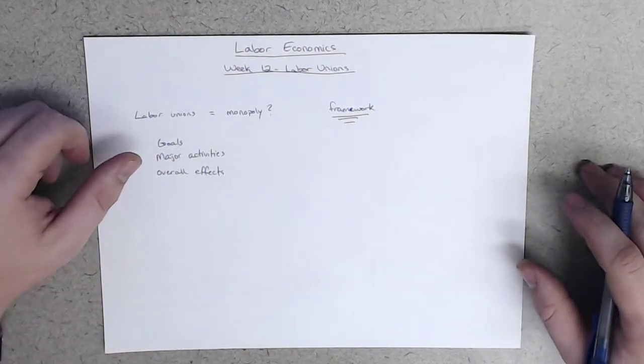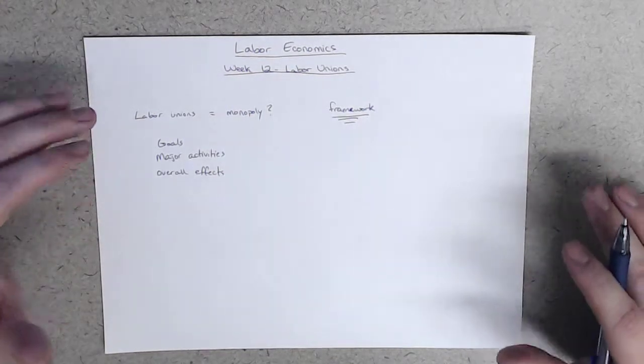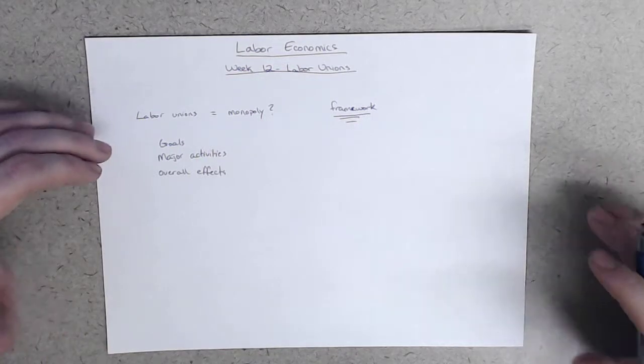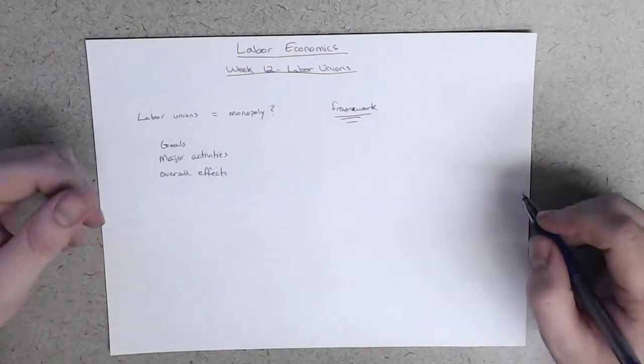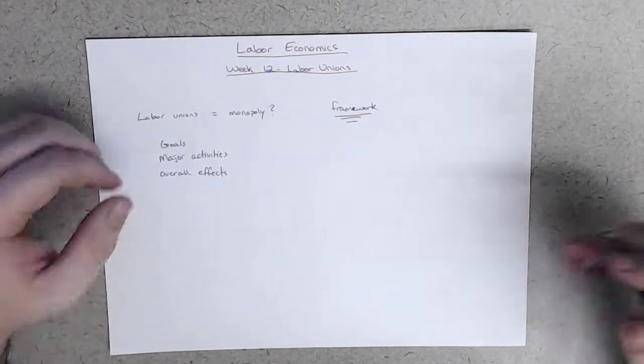With these in mind, we'll then move to an analysis of the primary activities of the collective bargaining process and discuss empirical evidence on how unions affect wages, employment, labor productivity, and ultimately, profits.